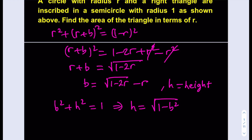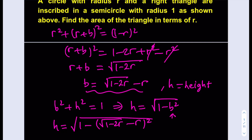Our goal is to find the area of the triangle in terms of r. We have the base in terms of r, but we don't have the height in terms of r — it's in terms of b. What we can do is find the height in terms of r by replacing b with the expression we found. So h equals the square root of 1 minus b squared, and b equals the square root of 1 minus 2r minus r, so that expression will be squared and subtracted from 1.